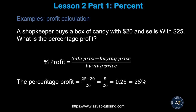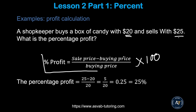Now let's calculate profit. The formula is: percent of profit = (selling price − buying price) ÷ buying price × 100. For example: buying price is $20, selling price is $25. So (25 − 20) ÷ 20 = 5/20 = 1/4. Simplify: divide both by 5 to get 1 over 4 = 0.25. Move two decimal places to convert to percent: 25% profit. Learn this concept — it's very important.